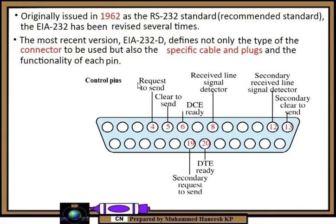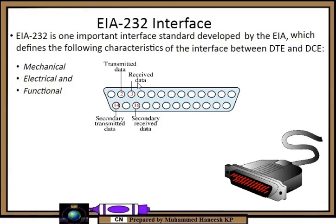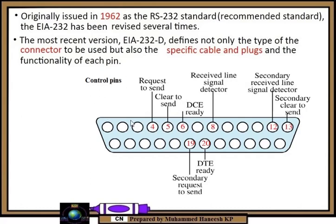The most recent version of EIA-232 defines not only the type of connector to be used, but also the specific cable and plugs and the functionality of each pin. As explained previously, pin number two is for transmitted data, pin number three for received data, pin number 14 for secondary transmit data, and pin number 16 for secondary received data. The female slots have 13 pins on top and 12 on the bottom. Pin number four is request to send, pin number five is clear to send.